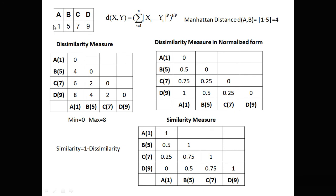Consider one-dimensional data points A, B, C, D with values 1, 5, 7, 9. We calculate the distance between A and B. Since the data is one-dimensional, n = 1 and p = 1. Manhattan distance is simply the absolute difference: |1 − 5| = 4. We calculate the absolute distance between all variable pairs and represent the results as an adjacency matrix. So the distance from A to A is 0, A to B is 4, A to C is 6, and A to D is 8.